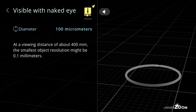Visible with naked eye, diameter: 100 micrometers. At a viewing distance of about 400 millimeters, the smallest object resolution might be 0.1 millimeters.